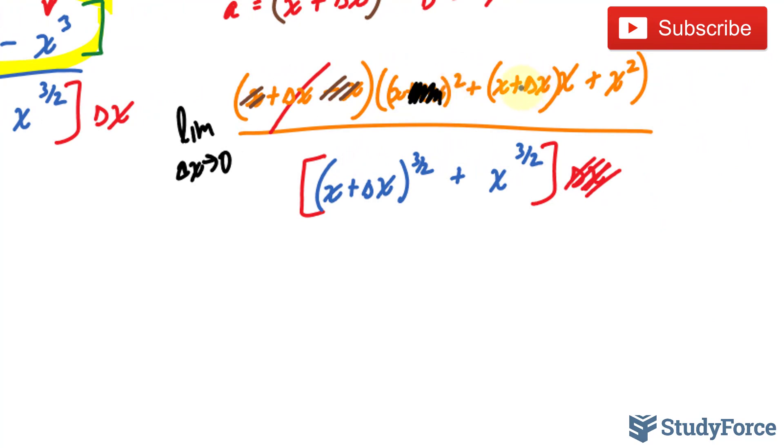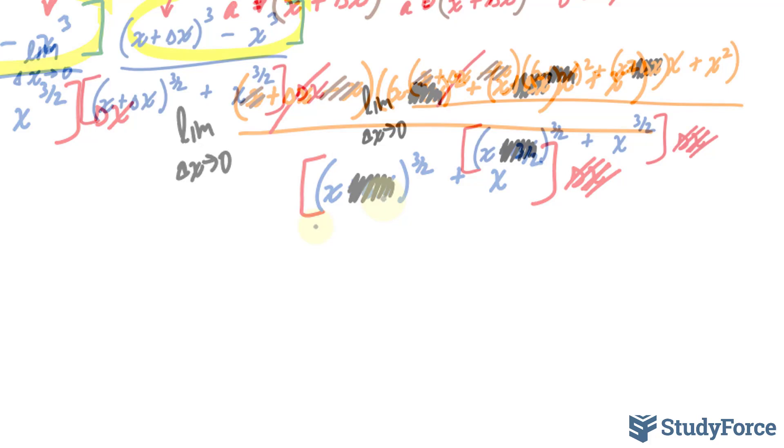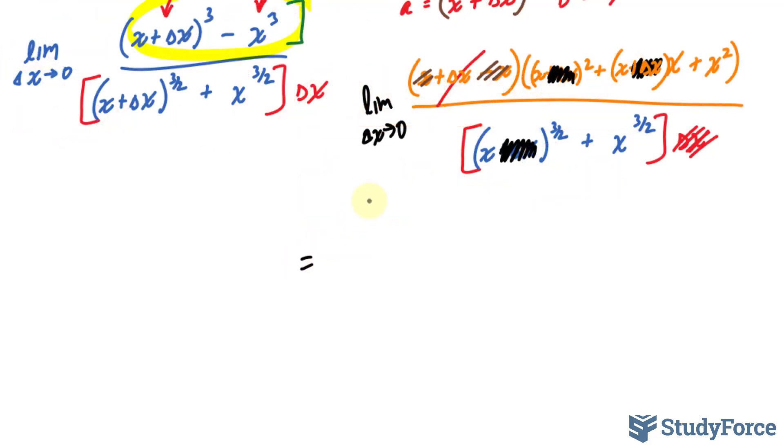So if I apply the limit, delta x here becomes zero. We're left with x to the power of two. That becomes zero. So we have x times x and x squared over here. This becomes zero.